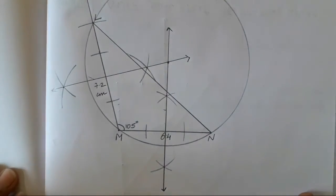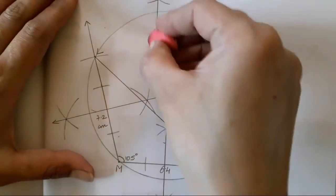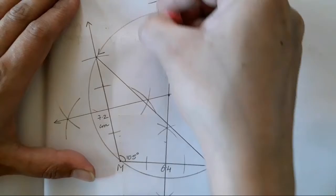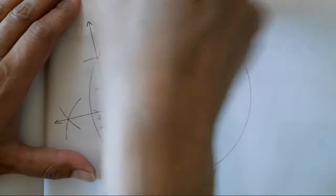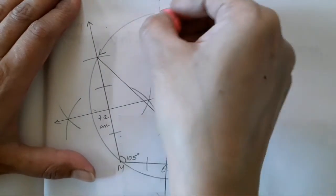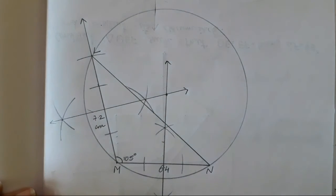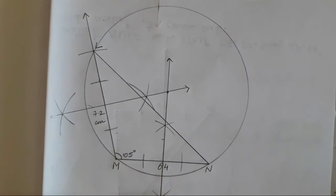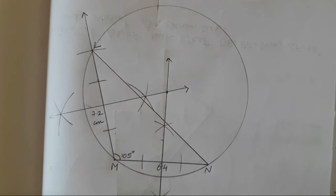I will just show you — just a minute, I will complete the circle. Now see, we have got our circumcircle. This was the other figure that we had drawn, so you don't have to consider it — it just came in between. So this is our question number four, constructed in this way. I hope you all have understood. Let's move on to the fifth question now.